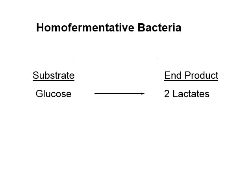The best way to do that is using homofermentative bacteria. That means they only produce one product when they ferment. They take the glucose — the water-soluble carbohydrate — and in homofermentative bacteria it's going to be turned into two lactates. You've got glucose, a six-carbon sugar; we divide that in half and generate two lactates. This is our goal.